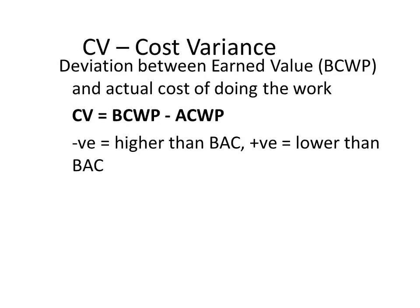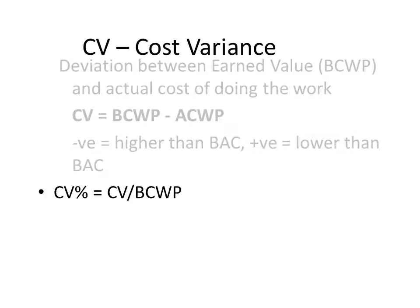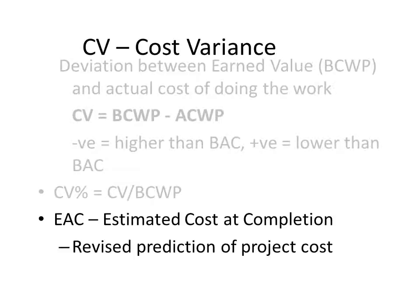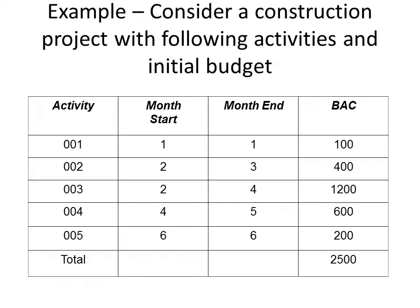Cost variance indicates the deviation between earned value (BCWP) and actual cost of doing the work. If it's negative, your actual cost for completing the project would be higher than the allocated budget. If positive, the final spending would be lower than the budgeted cost at completion. We use the formula CV divided by BCWP to calculate cost variance percentage. EAC refers to estimated cost at completion — the new predicted cost for your project to complete.